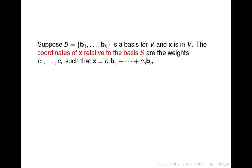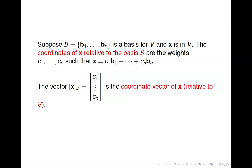The weights we use — these C values — are called the coordinates of X relative to the basis B. We write them using the notation X with brackets around it and a subscript B, and we call that the coordinate vector of X relative to the basis B.